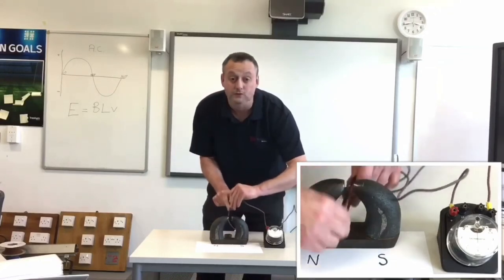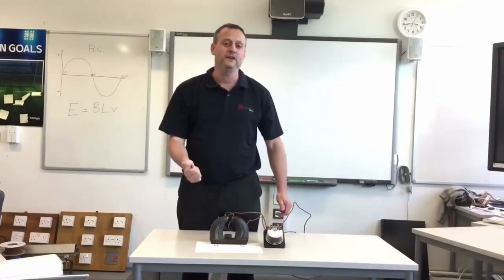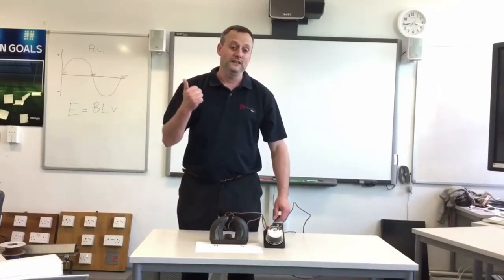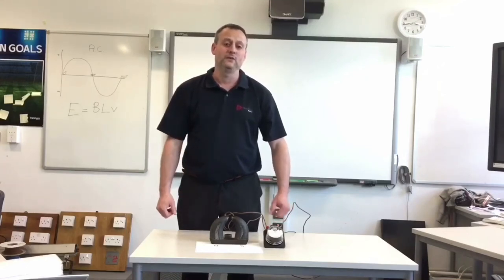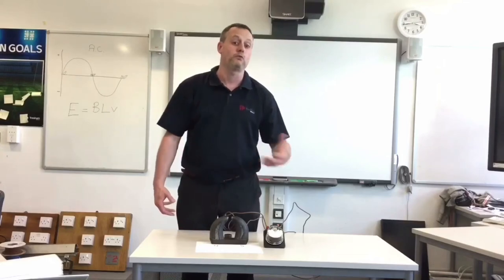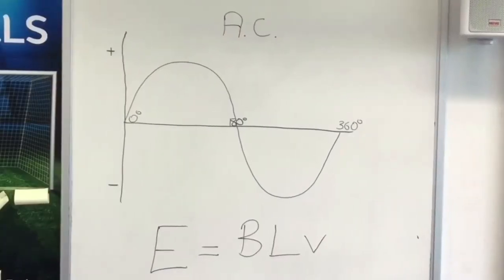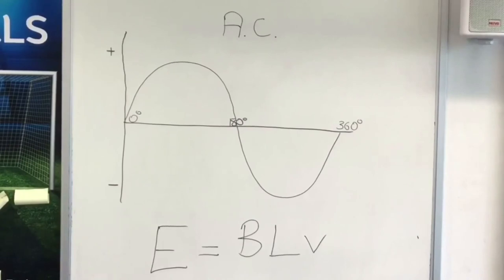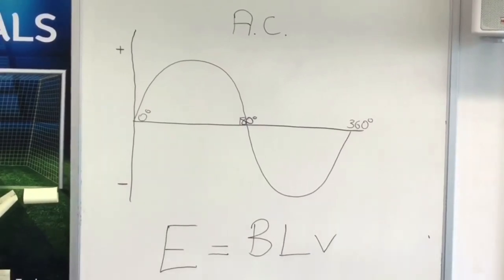Increasing the speed of the conductor through the magnetic field and increasing the amount of copper in the magnetic field both increase the developed EMF. From the first part of this demonstration, passing the conductor through the magnetic field and watching it deflect back and forth on the galvanometer, we proved the principles of alternating current — the current goes in one direction from zero degrees through to 180, and in the opposite direction from 180 through to 360.